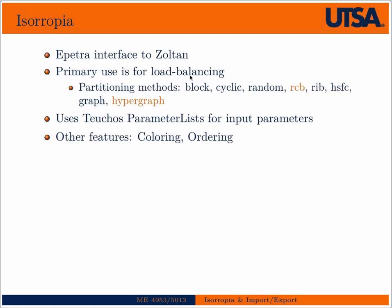Isoropia is a Petra interface to Zoltan. Zoltan is a Trilinos package in and of itself — it's a very sophisticated load balancing package. Isoropia is basically a wrapper on that which takes in the Petra data structures — vectors, matrices, graphs — and then performs a load balancing operation on them.